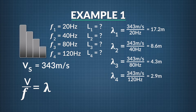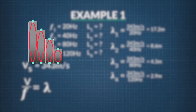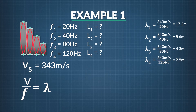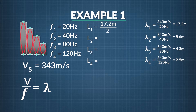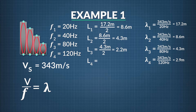These wavelengths tell us how long our pipes will need to be. Since both ends are closed, one half of a fundamental wavelength fits in each pipe. So we divide each wavelength by 2 to get the pipe length. L1 = 17.2 meters divided by 2 = 8.6 meters. L2 = 8.6 meters divided by 2 = 4.3 meters. L3 = 4.3 meters divided by 2 = 2.2 meters. And L4 = 2.9 meters divided by 2 = 1.4 meters.